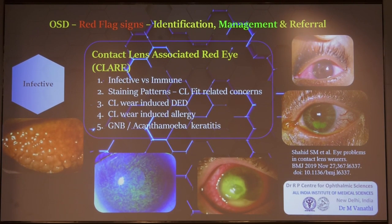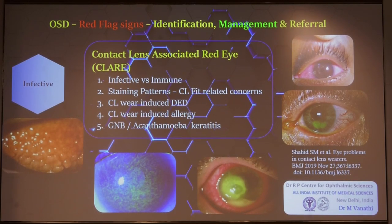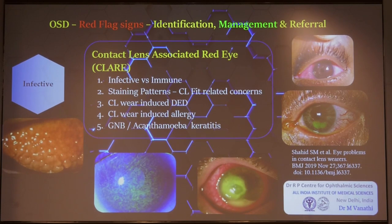When looking at CLER — contact lens-associated red eye — you need to differentiate whether it's due to an immune disease or an infective disease. For contact lens-induced keratitis, you must determine whether it's infectious or immune. With immune keratitis, the lesions are usually not associated with pain initially, may be unifocal or multifocal, and are peripheral. When there is significant blepharospasm, conjunctival injection, pain, and anterior chamber inflammation, you would lean toward an infective etiology.